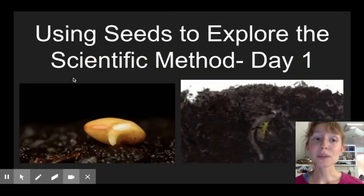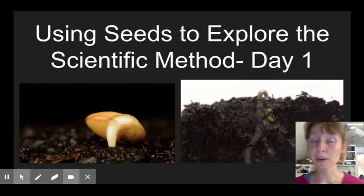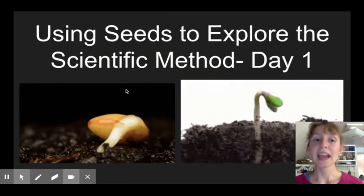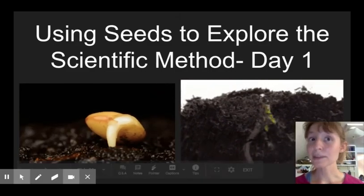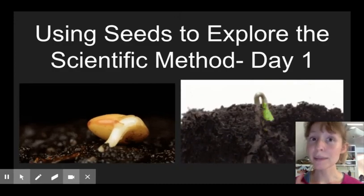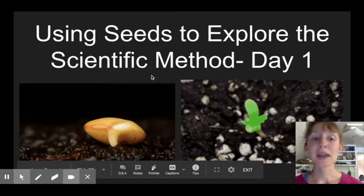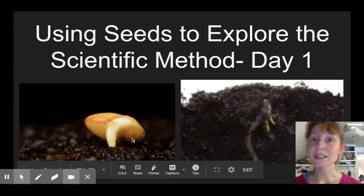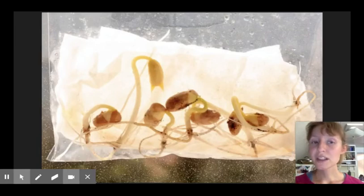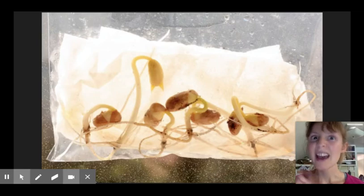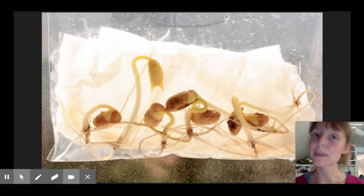So tomorrow we're going to be using seeds to explore the scientific method. And I'm going to explain this lab during a zoom meeting tomorrow. So make sure you're checking your email and remind for that zoom link. But basically, we're going to look at the process of germination, which is when a seed sprouts. So here's some seeds sprouting in a bag with a paper towel in it. And that is what we're going to do in our lab at home. But in the zoom meeting, I'll walk you through it. So for that zoom meeting, what I want you to get is 20 different seeds.